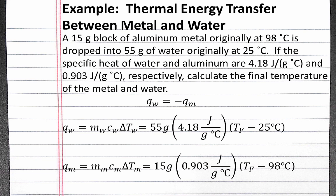So for the metal, that's 15 grams times 0.903 joules per gram degree Celsius times the final temperature minus the initial temperature, which is 98 degrees Celsius.